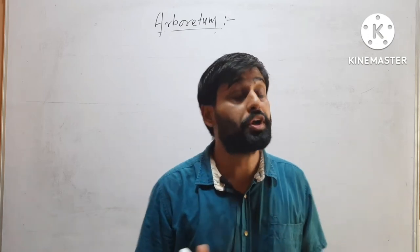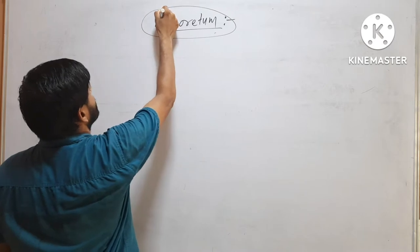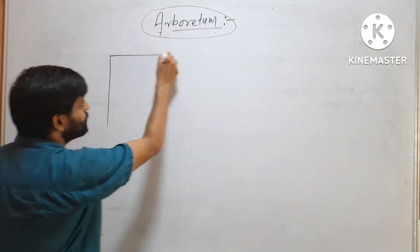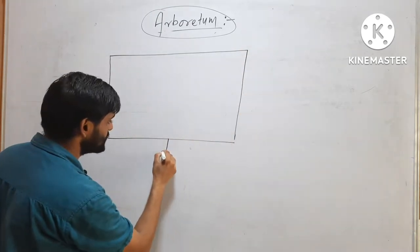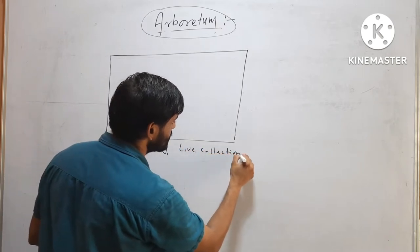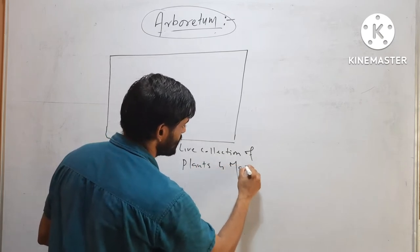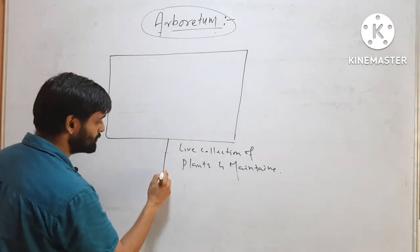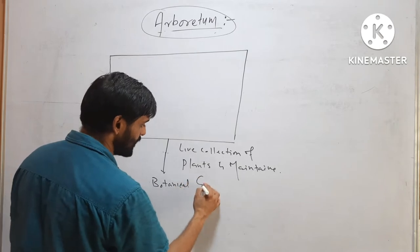What is Arboretum? Suppose this is a place where live collection of plants is maintained. This place will be called Botanical Garden.